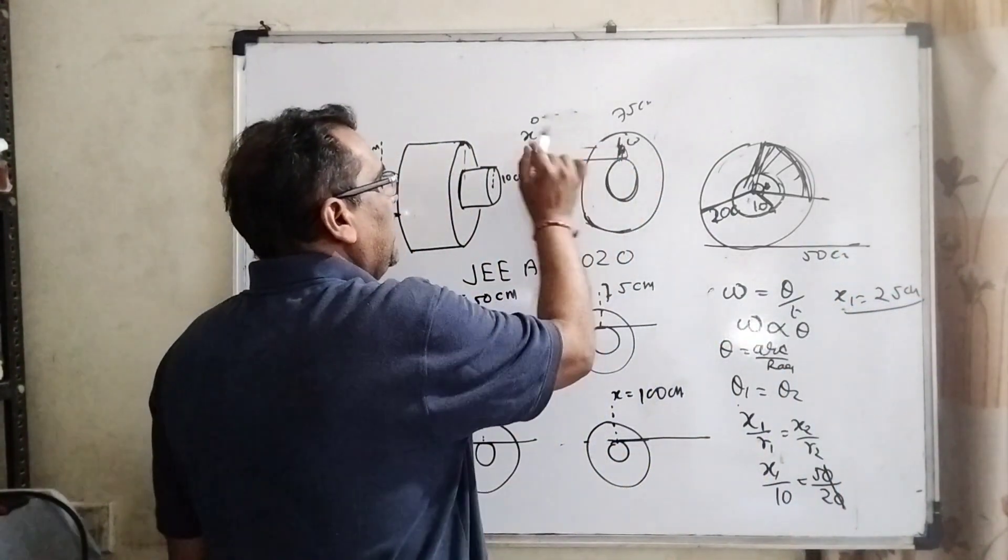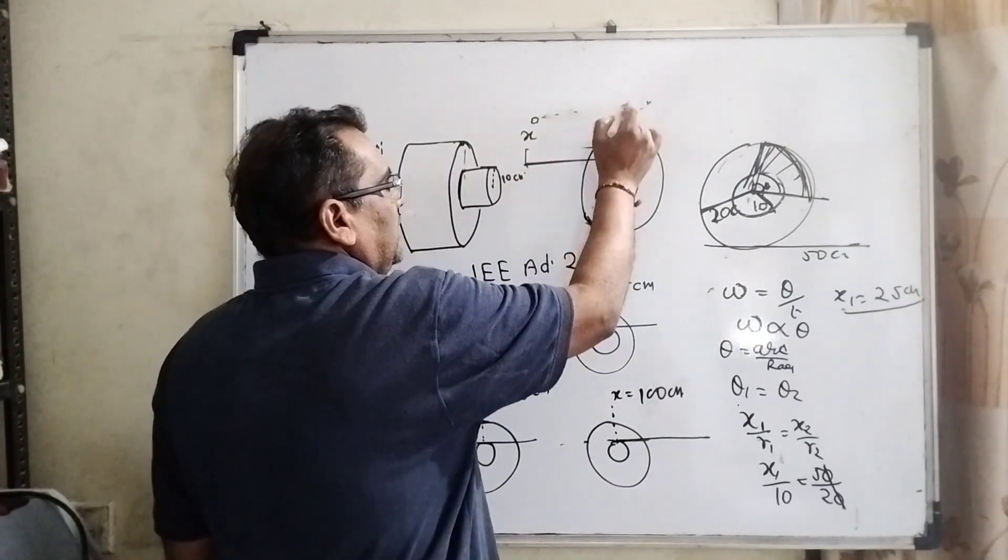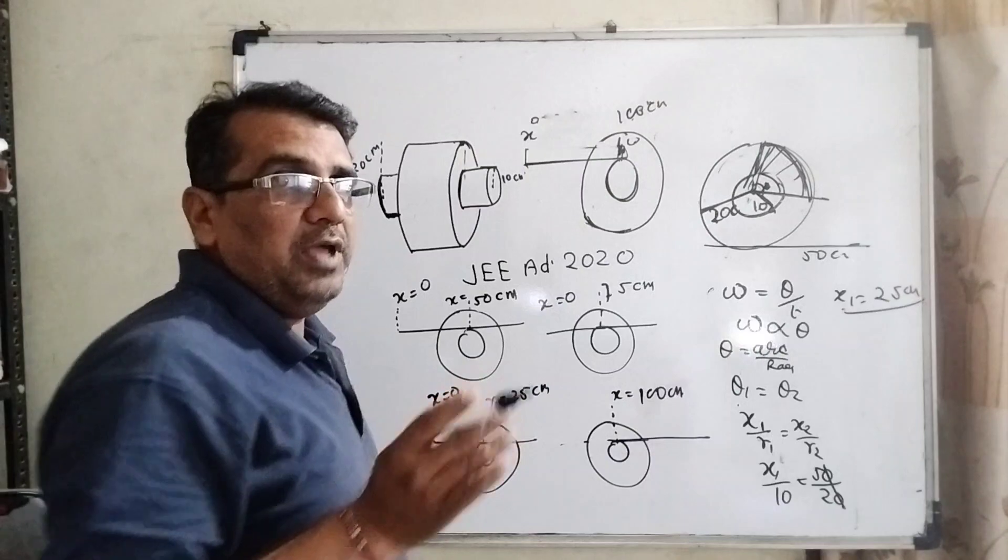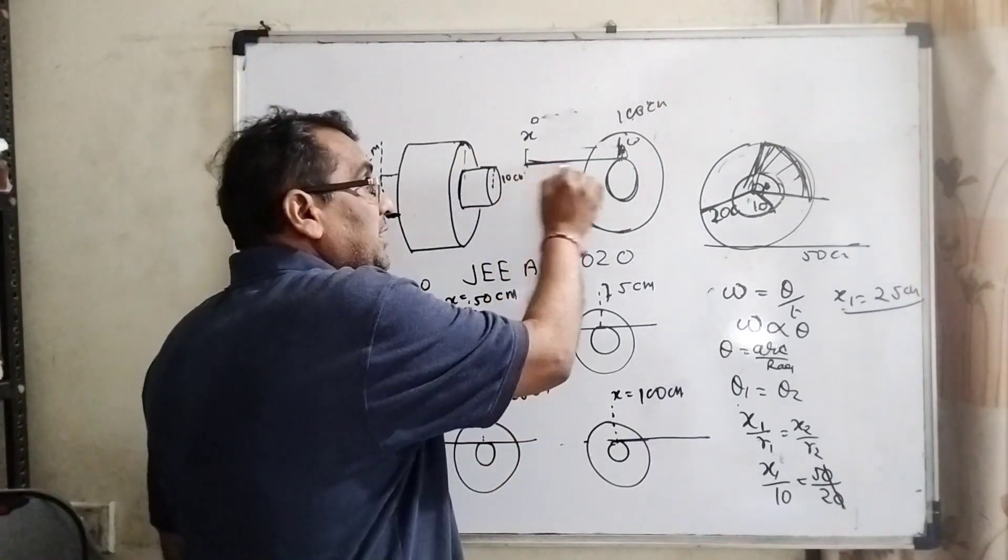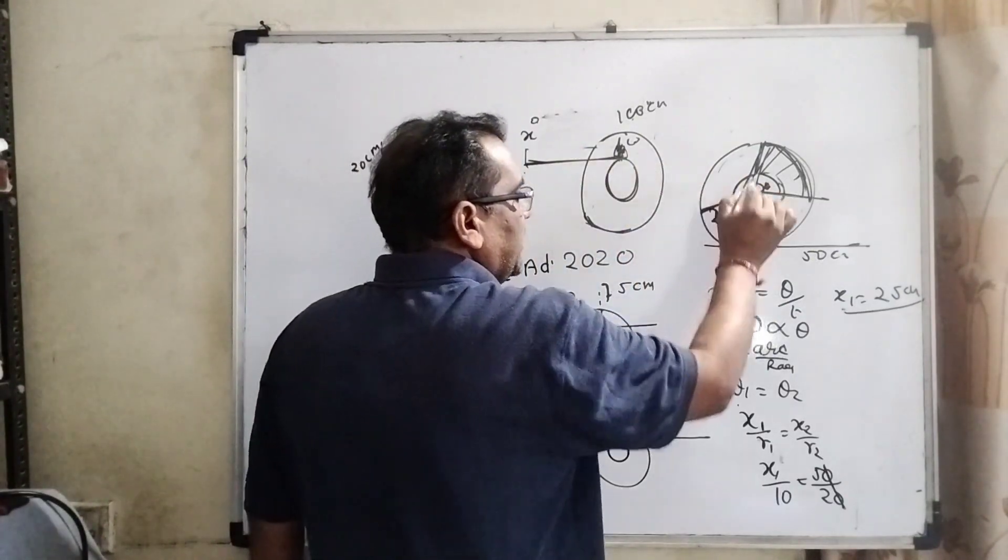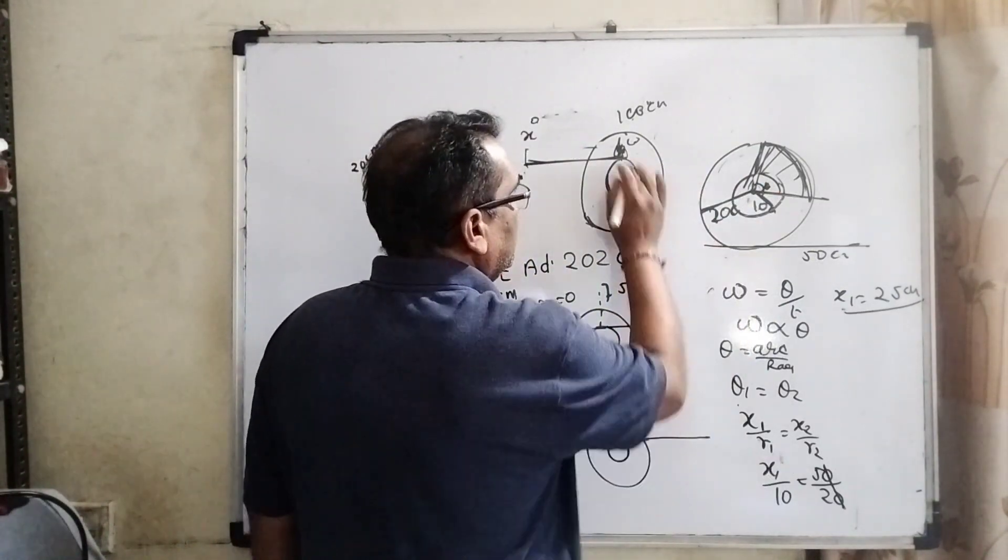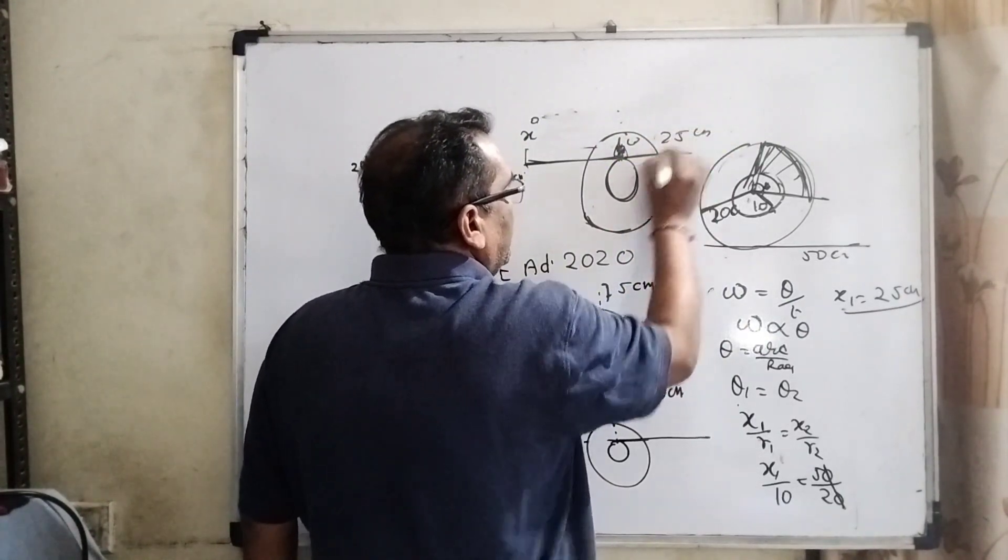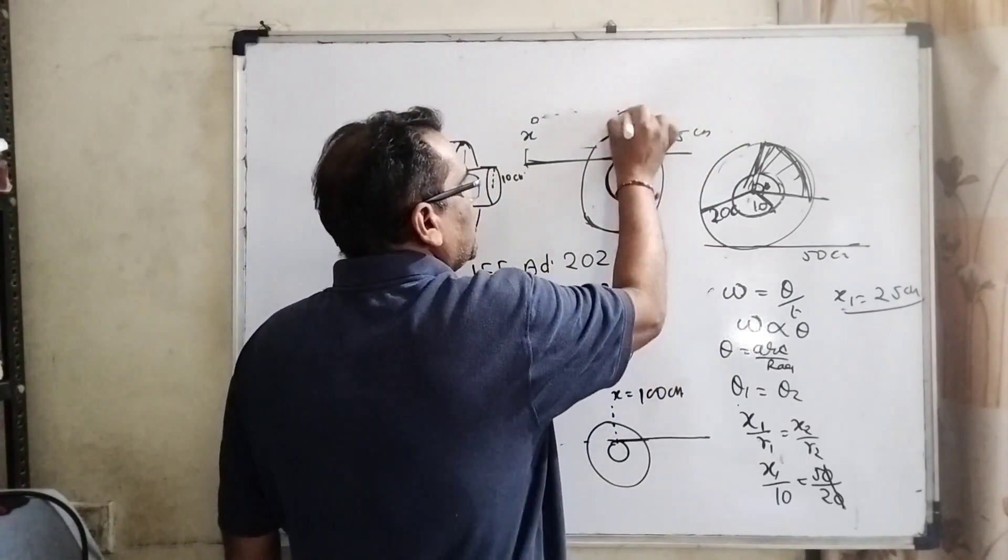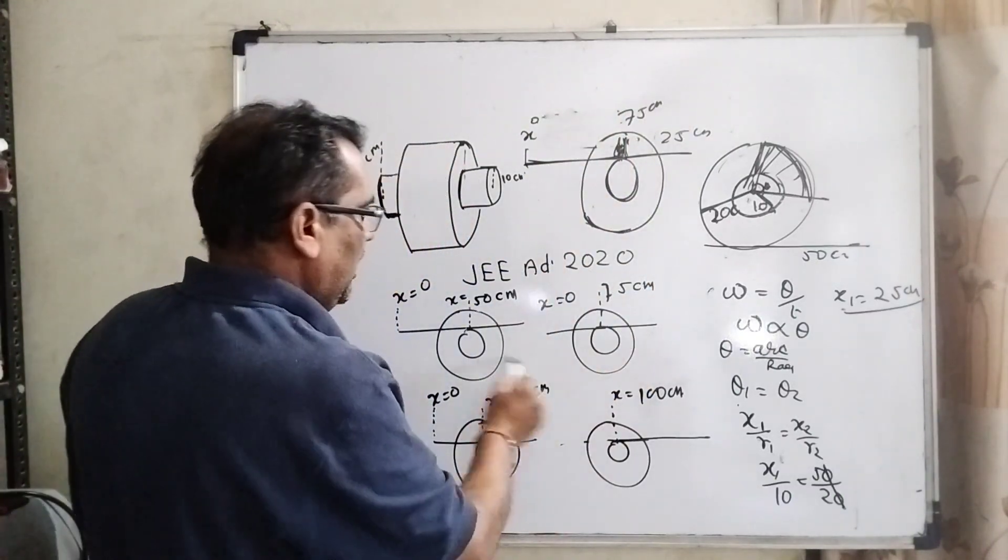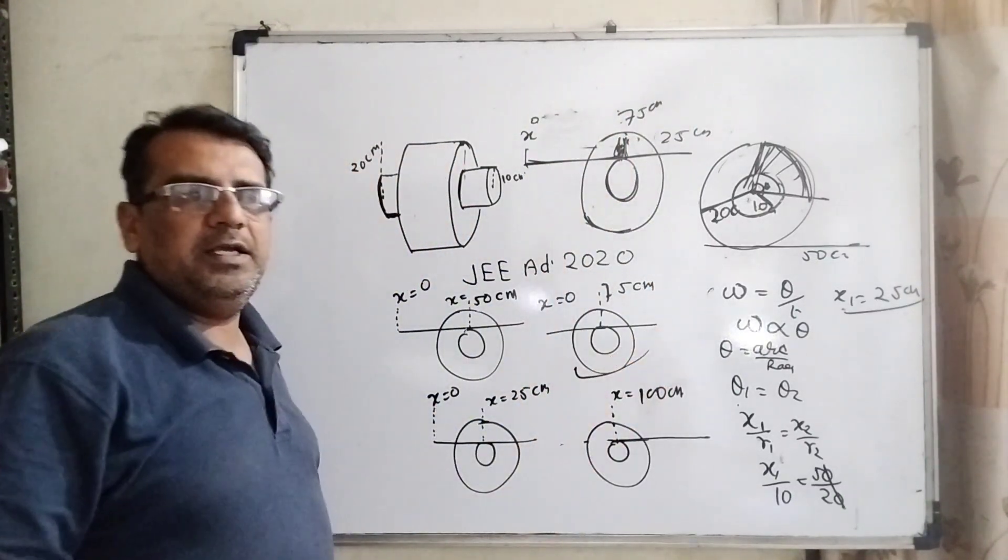Here you can see that x equals 0 and this mark is 100 centimeters because we have a meter scale. A meter scale means 0 to 100. So therefore, it will be moved 25 centimeters forward. 25 centimeters forward means this mark shows 75 centimeters. So here our option B is correct.